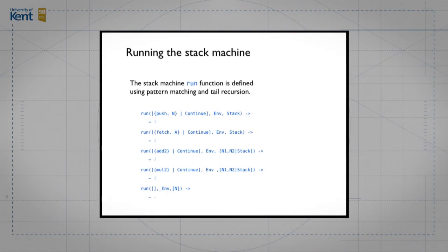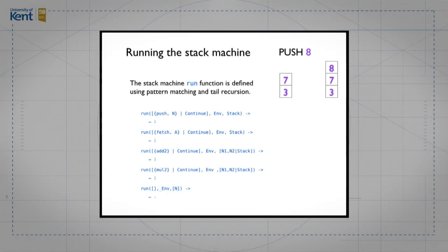When running the stack machine we run it one instruction at a time. We structure our program to match on the next instruction to execute — there are four cases for the four different kinds of instruction. We pattern match on the first element of the program list; the remainder we call 'continue'. In the push case, we match the push instruction, and on the right-hand side we call run again with the continue program, the same environment, but with the pushed value added to the top of the stack.